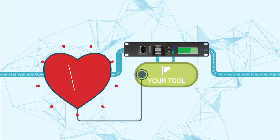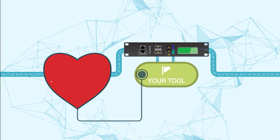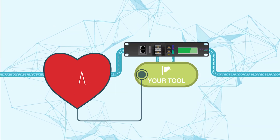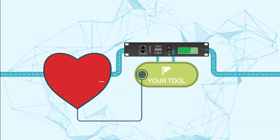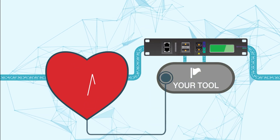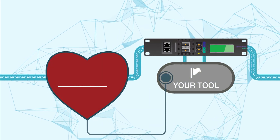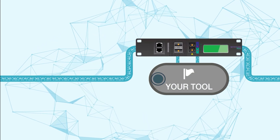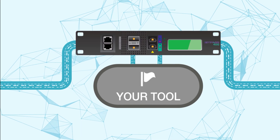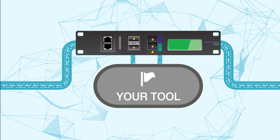To keep this from happening, you need a bypass switch in place to continually verify that each of your inline tools is up and responding. If the bypass switch cannot confirm that your tool is working, then it fails open and allows traffic to flow through the tool and into the network anyways. This prevents network downtime while you troubleshoot your tools.